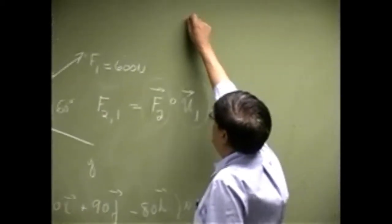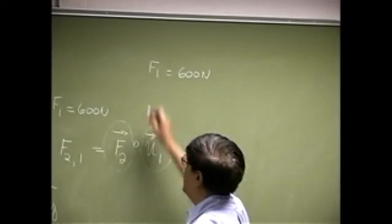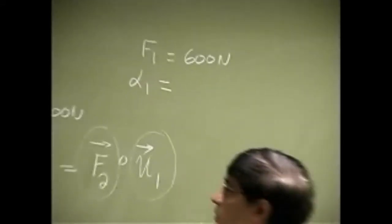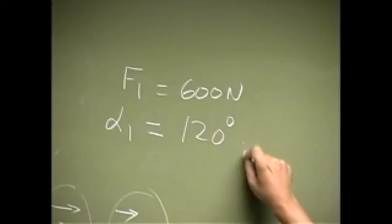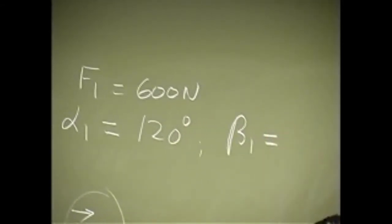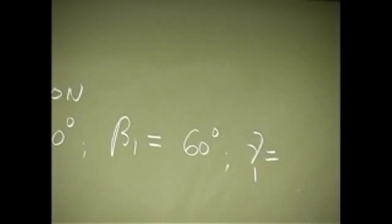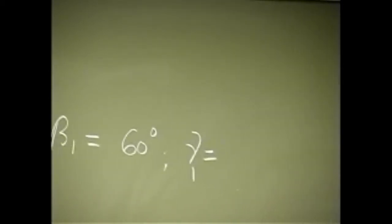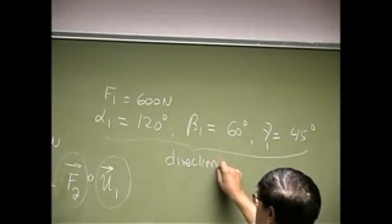Now what we have is the force magnitude, that's 600 Newtons. Then we have the angle alpha 1, that's the angle between force and x-axis, that's 120 degrees. Then we have angle beta 1, that's the angle between force and y-axis, that's 60 degrees. Then we have the angle between force and z-axis, that's 45 degrees. So we know all these three. These are known as direction angles.